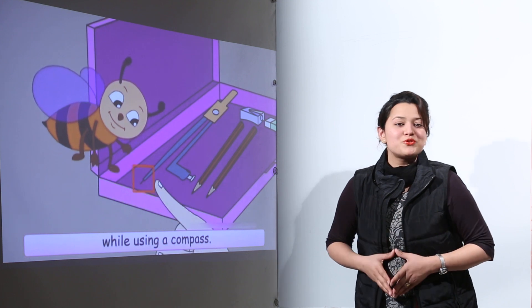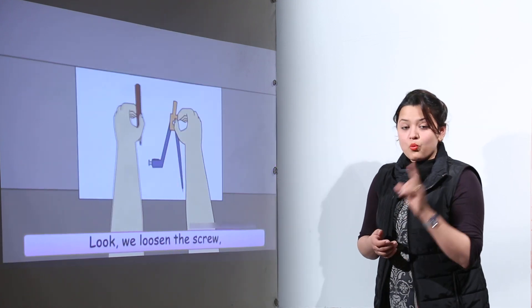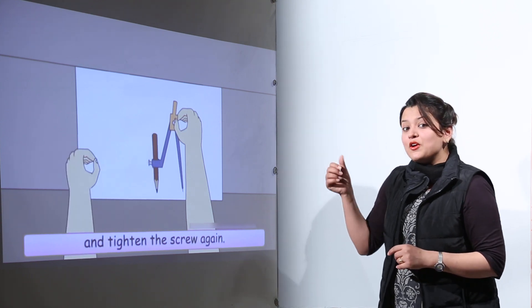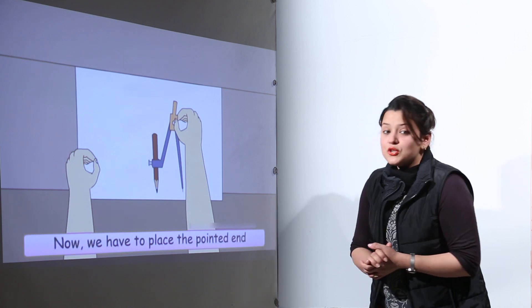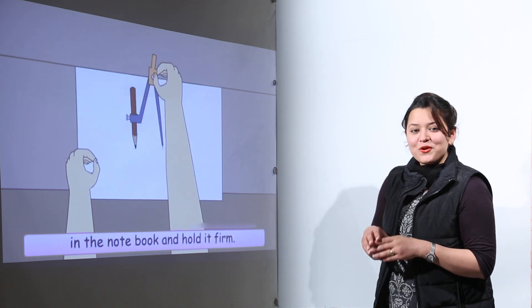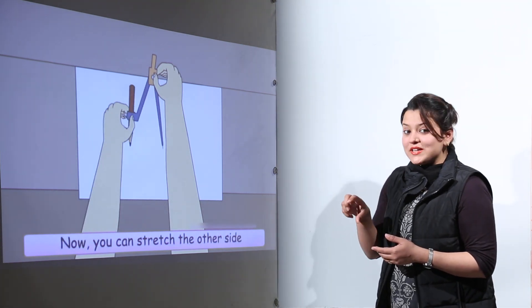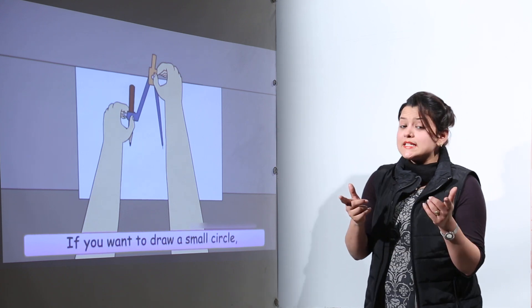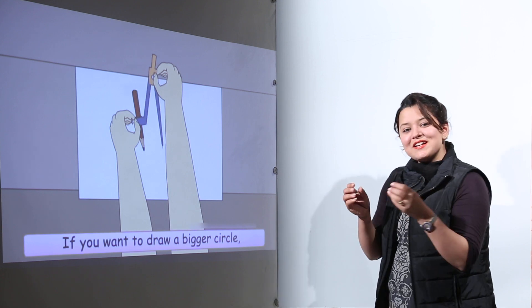A compass is actually used to make a circle. You are familiar - it has a very pointed end. One endpoint is very pointed. On the other end we unscrew it and place the pencil as we've just done. To make a circle we're going to place the pointed end at one point, fix it, and rotate the other end.